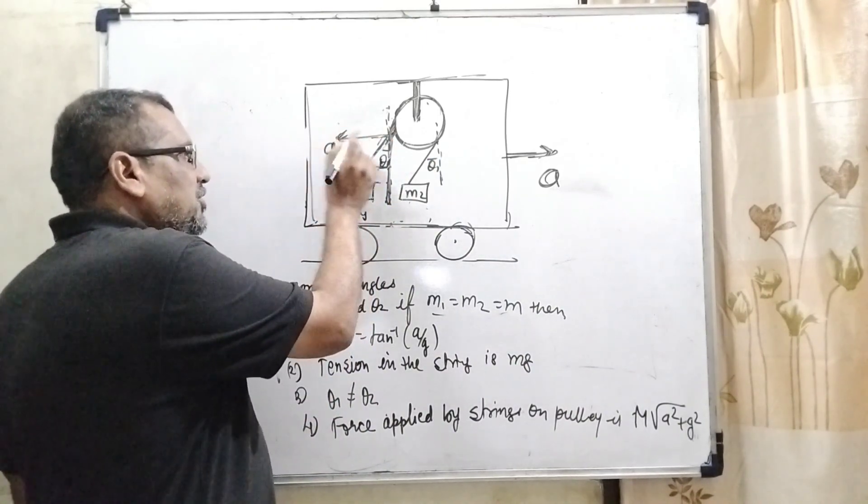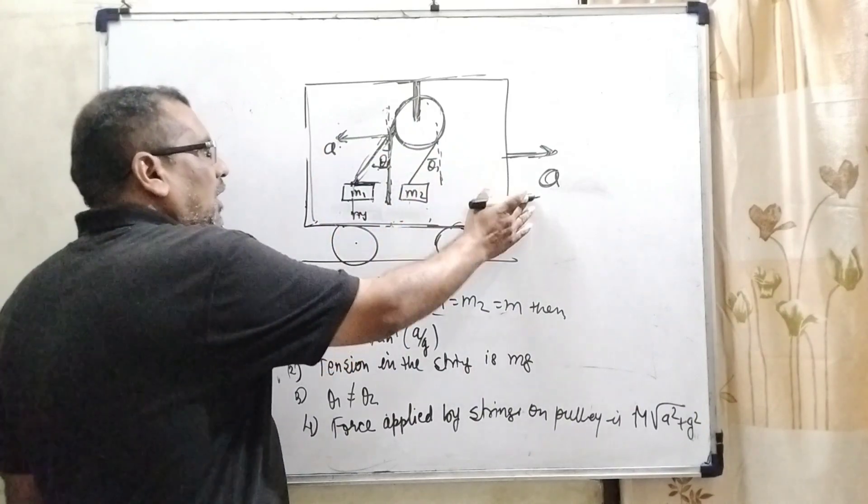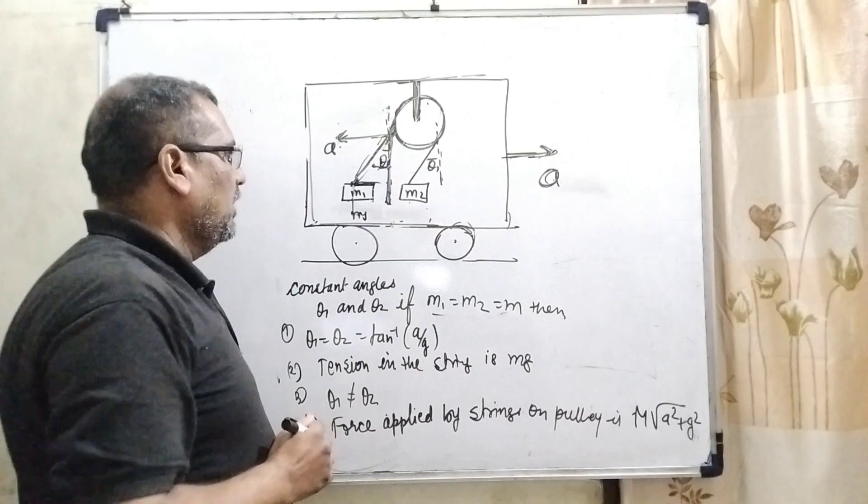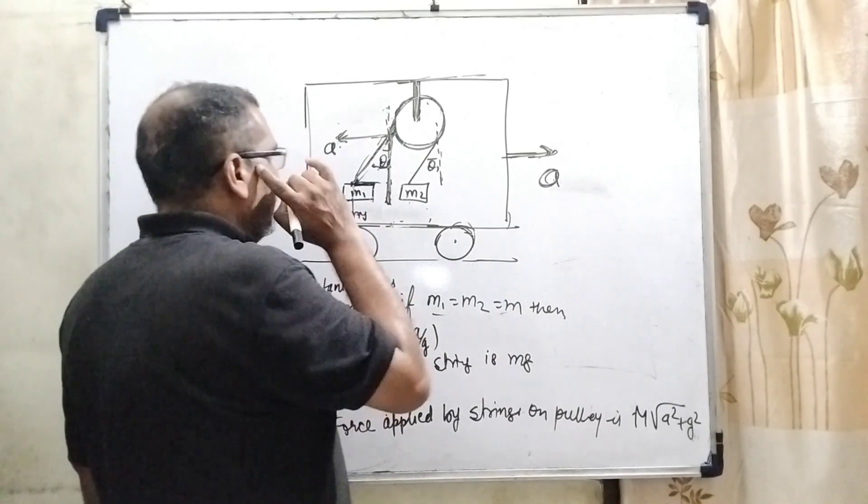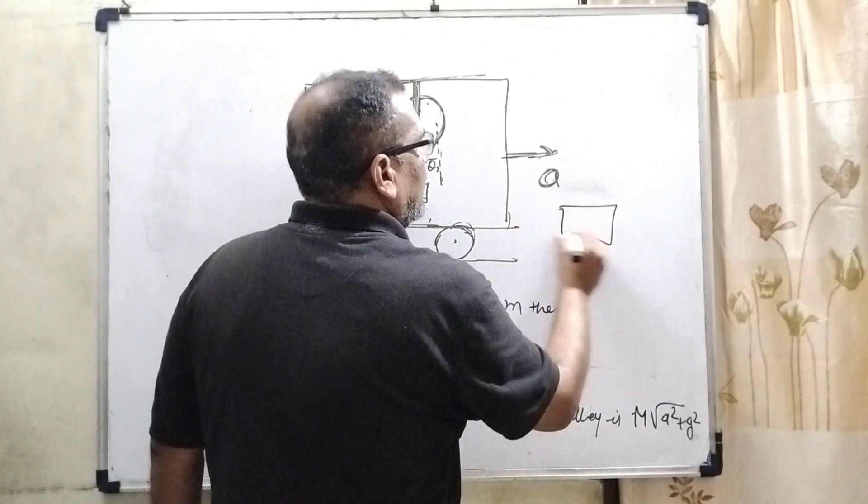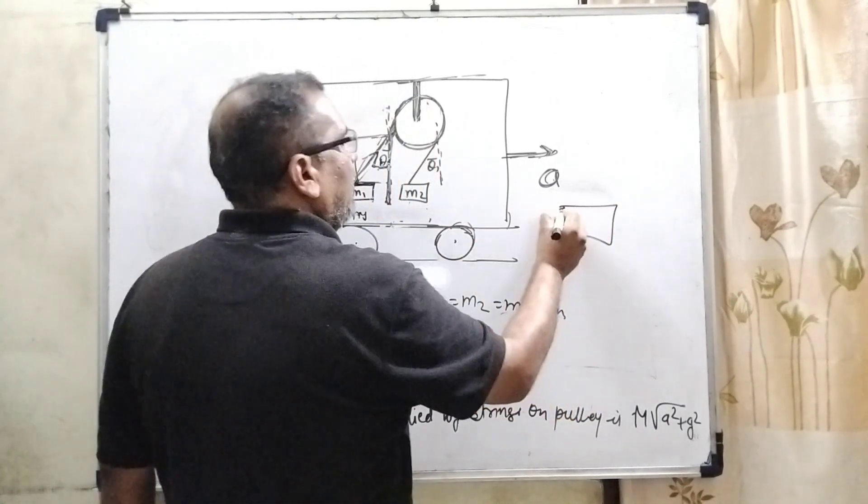So here acceleration exactly equal to this a is acting in the opposite direction, that is called pseudo. Here mg is acting in the downward direction and it is tension force. So we will draw the free body diagram for m1.